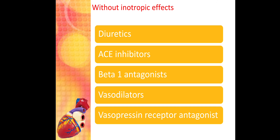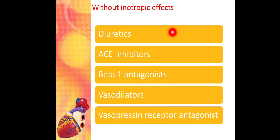Now we move to drugs useful in CHF that do not have inotropic effect — they do not increase force of contraction. These include diuretics, ACE inhibitors, beta-1 antagonists, vasodilators, and vasopressin receptor antagonists. We'll discuss each group's role in CHF without going into full detail, as most have been covered previously.